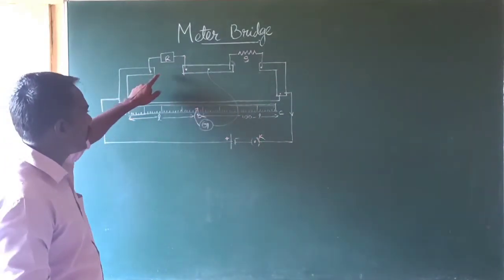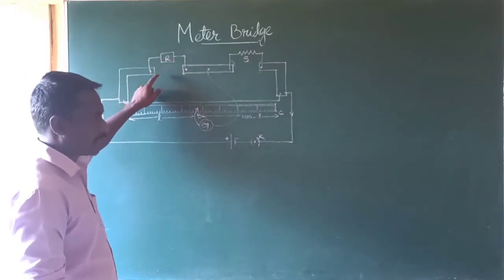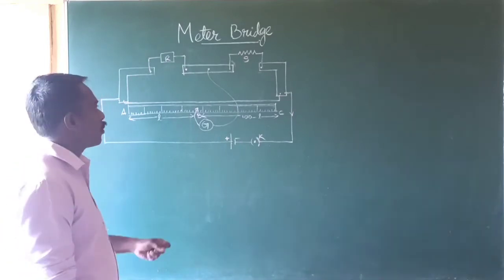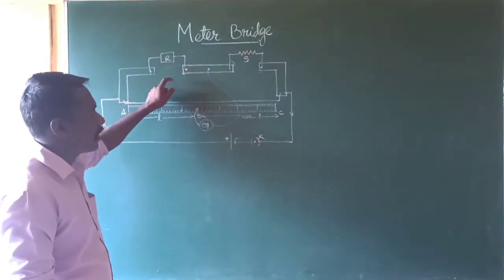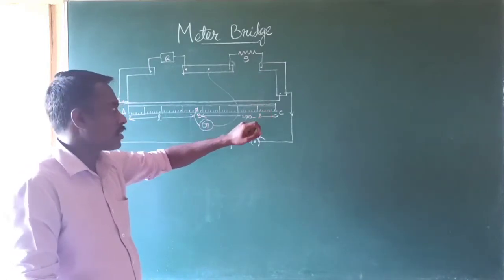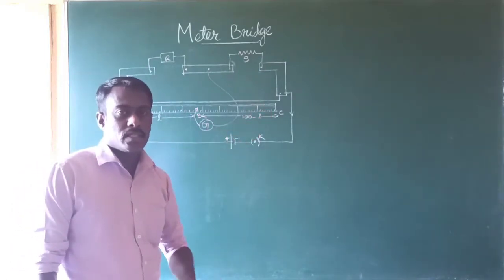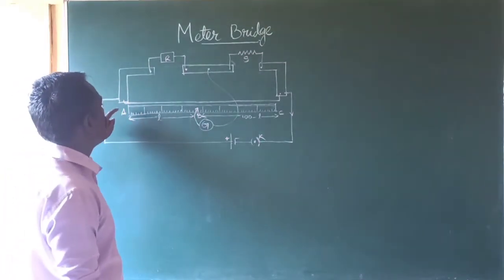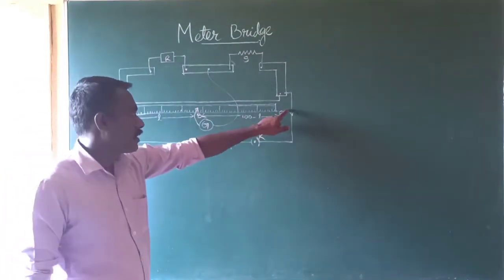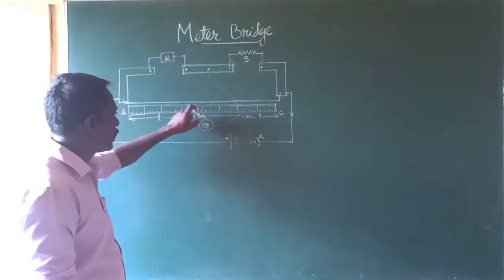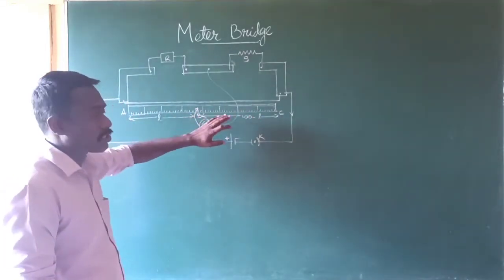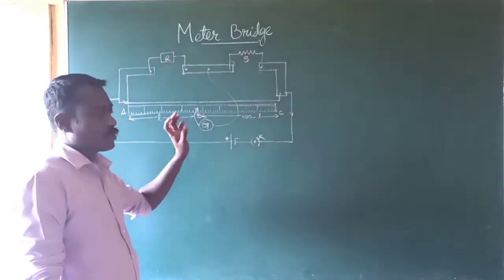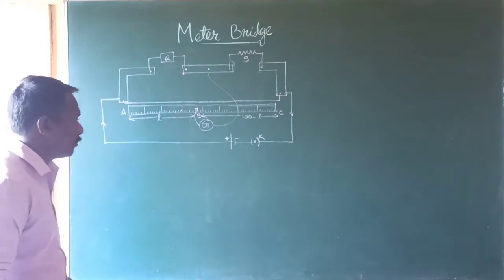In the first gap, a resistance box is connected where we can adjust a known value for the resistance. In the second gap, another resistance whose value is unknown is connected. From point A to C, a meter scale is fixed, and these strips are fixed on a wooden piece. A wire runs from point A to C along the entire length of the scale.